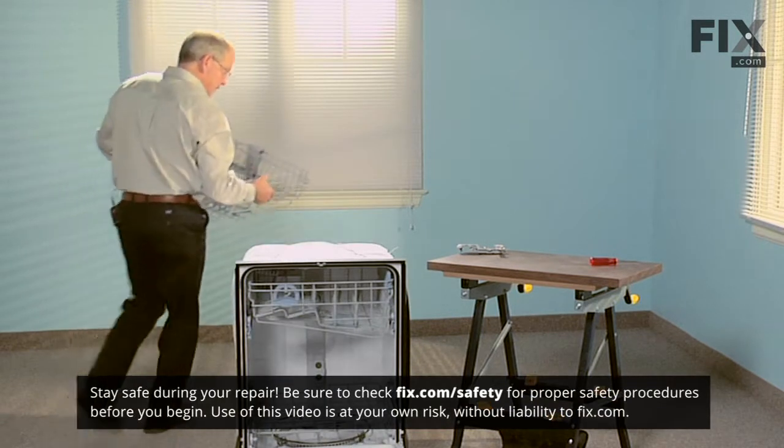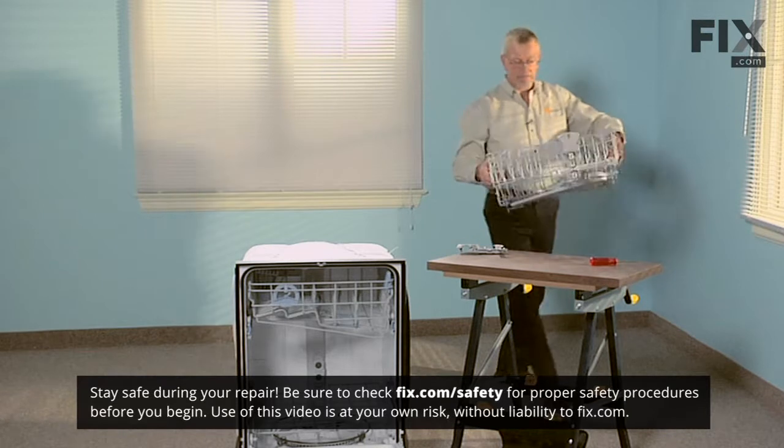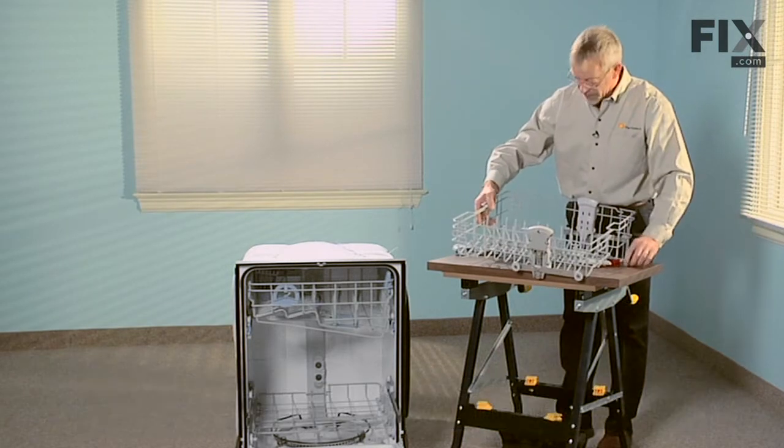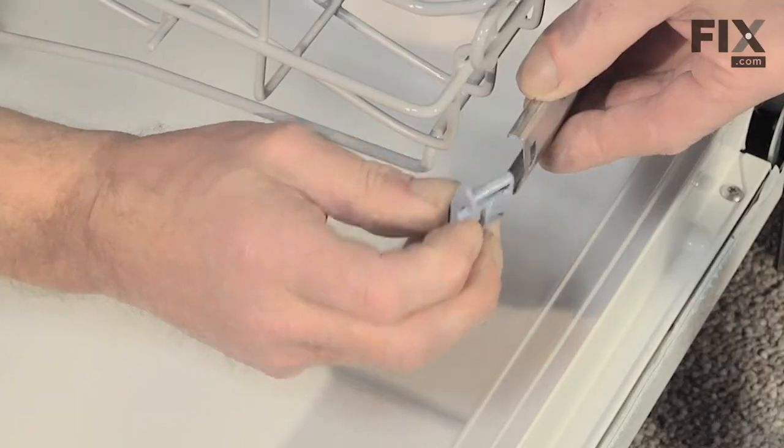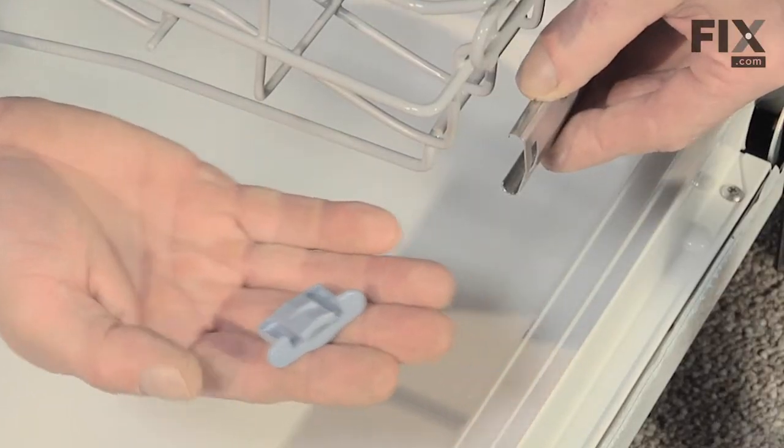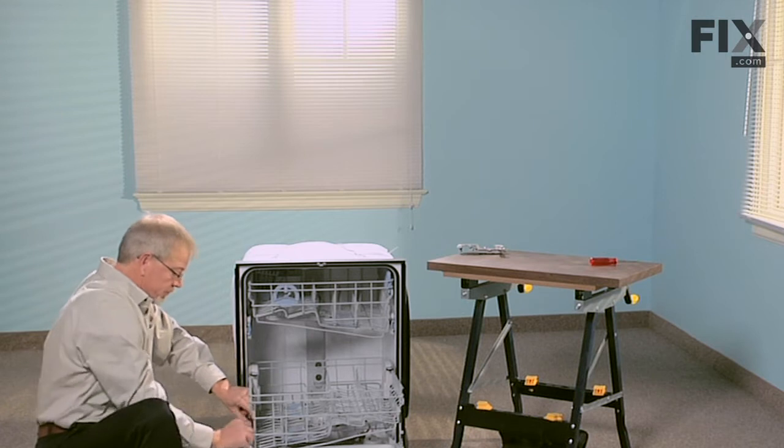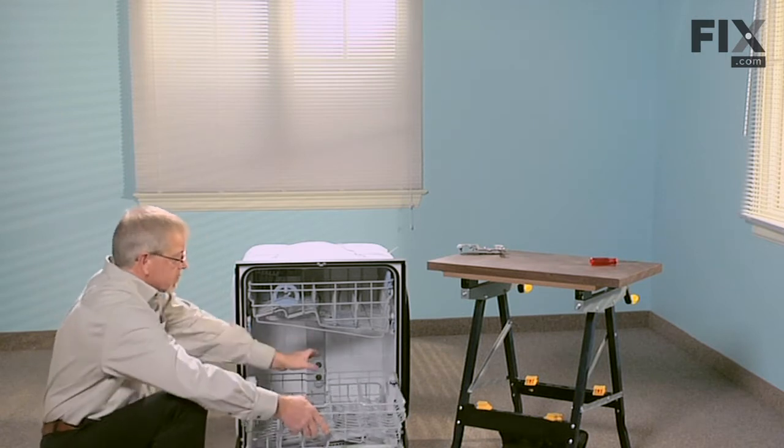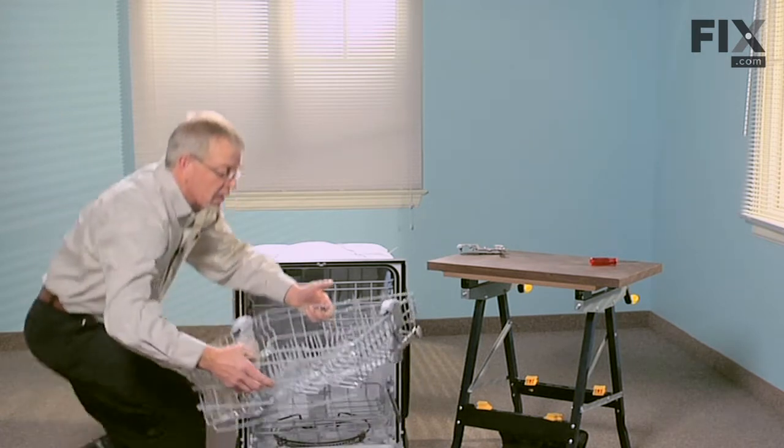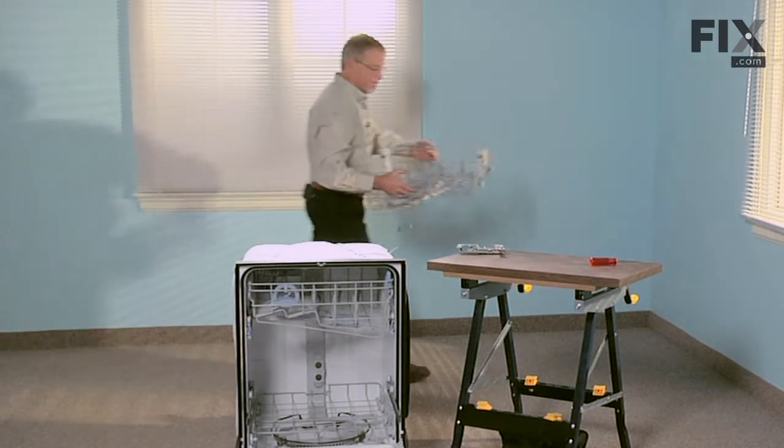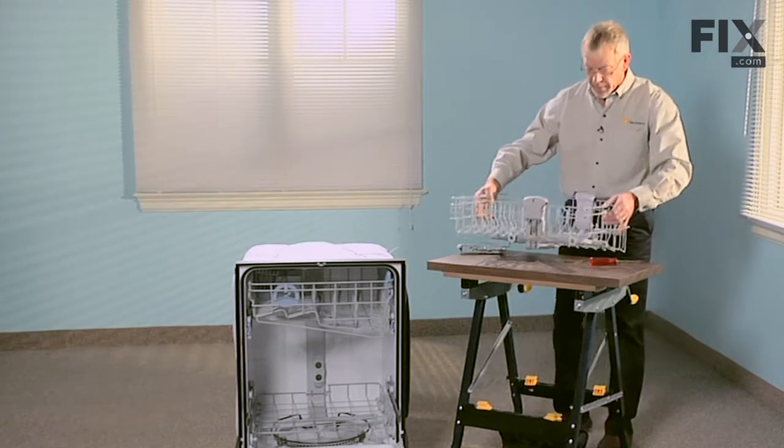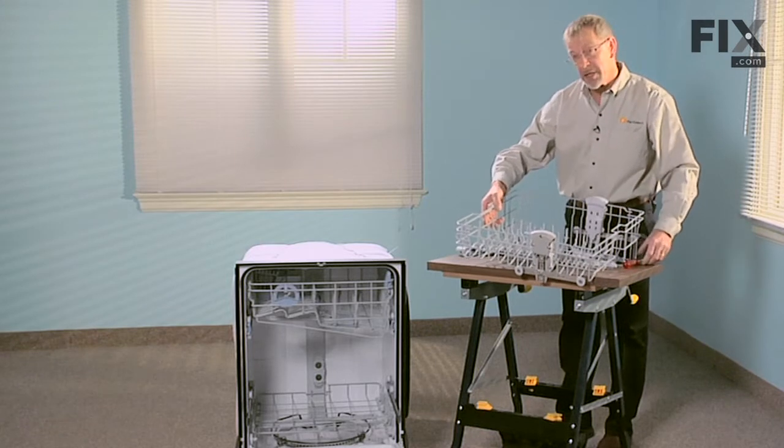To make this easier, let's take the rack right out of the dishwasher. Remove our little clips on the ends of the rails, slide it out and that's our rack stop. Do the same on the other side. Now we've got the rack where we can work on. This will be a whole lot easier this way.